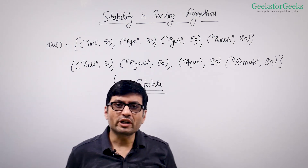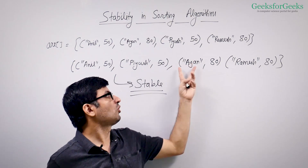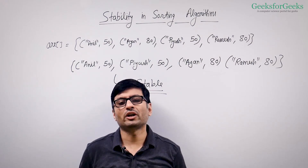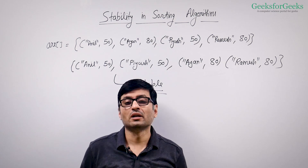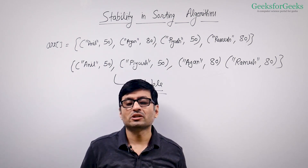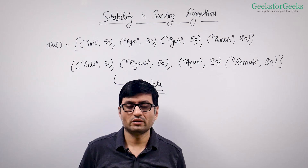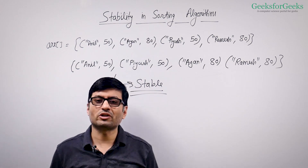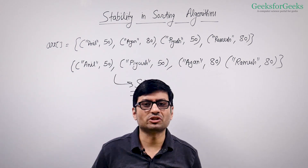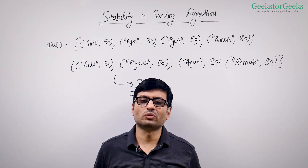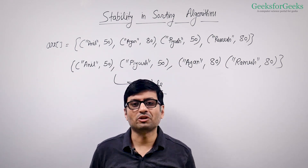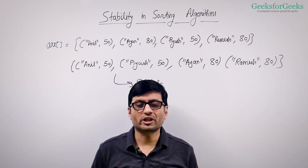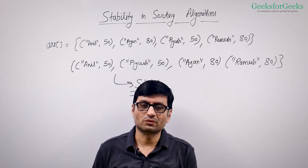Stability is important only when you have objects with multiple fields and you are sorting them by one or two fields, and you want the other fields to follow the original order. Stability is not important if you are sorting a plain integer array — no associated objects — then stability has no use. It is useful when you have objects with more than one field and you are sorting them according to one, two, or three fields.